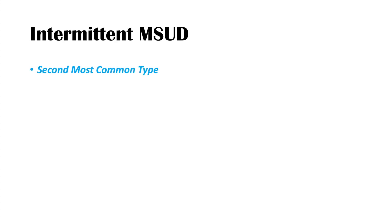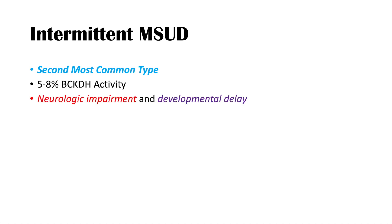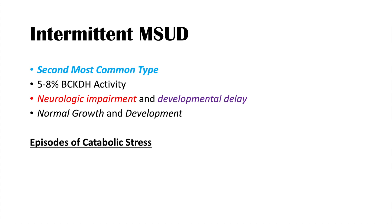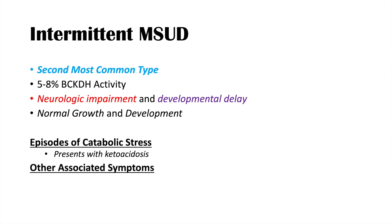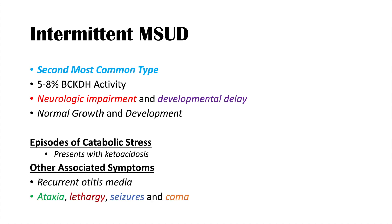The intermittent variant is the second most common type, with a BCKDH activity level of 5 to 8%. It is characterized by neurologic impairment and developmental delay, though individuals generally have normal growth and development. During episodes of catabolic stress, they present with ketoacidosis, and can also experience recurrent otitis media, ataxia, lethargy, seizures, and coma.